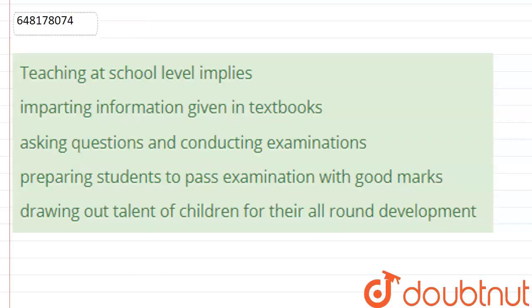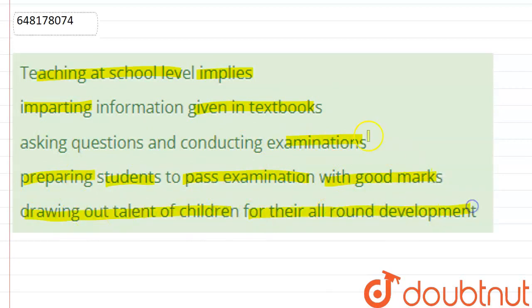Hello students, here the question is: 'Teaching at school level implies.' The options are: Imparting information given in textbooks; Asking questions and conducting examinations; Preparing students to pass examinations with good marks; Drawing out talent of children for their all-around development.